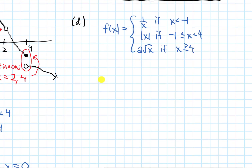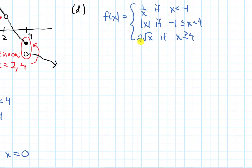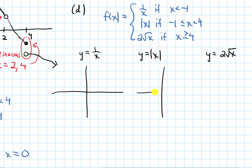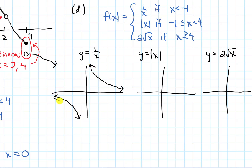Part D asks us to graph this function — this is some algebra review on how we graph piecewise functions. Recalling what each piece looks like: y equals 1 over x is a hyperbola with one piece in each quadrant; y equals absolute value of x is a v-shape with the vertex at the origin; and y equals 2 root x is like the square root graph but stretched vertically by a factor of 2.